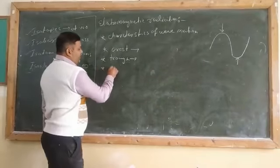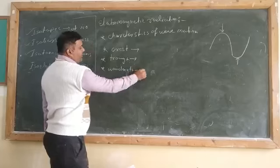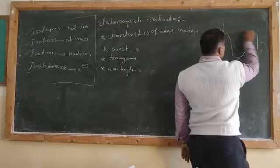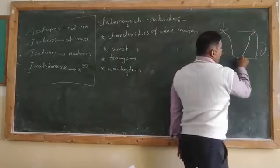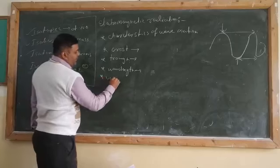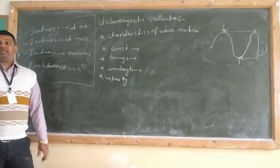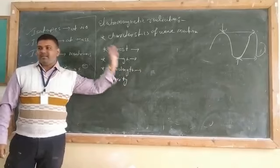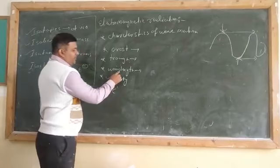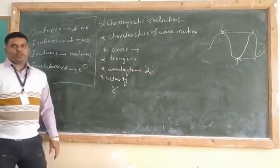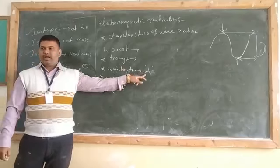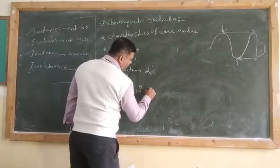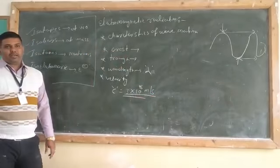We also learnt about wavelength. The distance between two crests, or between two troughs, is called the wavelength. After wavelength, we learnt about velocity. Velocity tells you about the speed at which the particular wave travels; it is denoted by the letter C. The speed of the wave is 3 × 10⁸ meters per second.